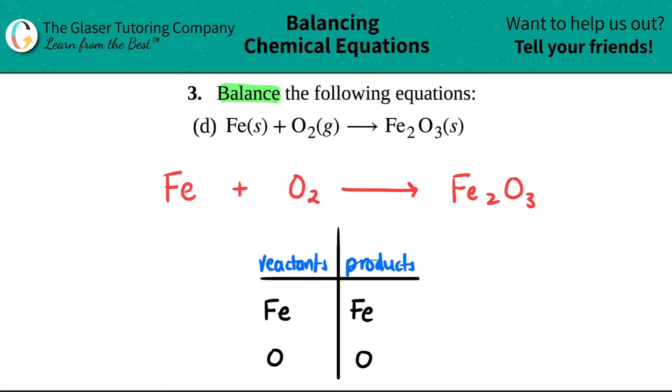Now we just have to put the numbers together. So let's see. On my reactant side, it literally just says Fe, which means that I have only one of them. So I have one Fe.